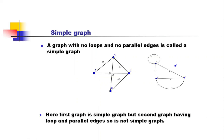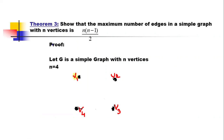In the first graph there are four vertices and there is no loop and no parallel edges, so this graph is a simple graph. In the second graph there is a loop at vertex A and a parallel edge between B and C, so that is not a simple graph. The first graph is a simple graph and the second graph is not a simple graph.